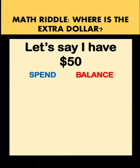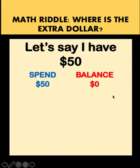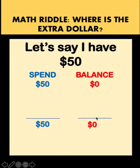On the other hand, let's say I have a different value. Let's say I started with $50 and I spent the entire $50 right away, and so my balance would be 0. Therefore, the total of the spend column is $50, and for the balance it's $0, which is way different than $50.